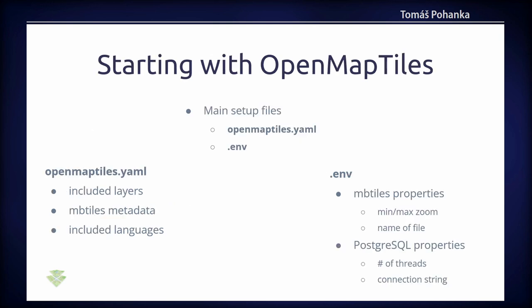In the main OpenMapTiles repository with the schema, there are two main setup files: the OpenMapTiles YAML file and the .env file. In the YAML file you define which layers will be included in the vector tiles, MBTiles metadata such as description or attribution, and a list of languages for your multi-language map. In the .env file there are properties like minimum and maximum zoom level, PostgreSQL number of threads, or the connection string.